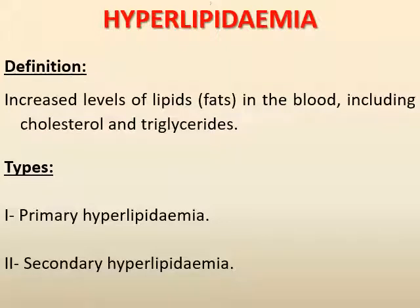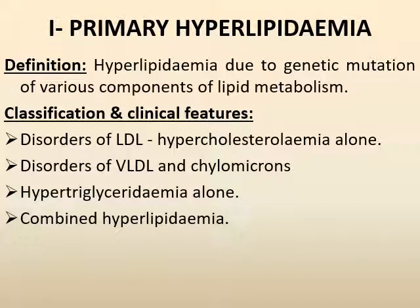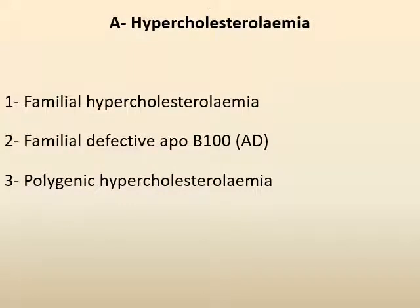The second part covers hyperlipidemia, defined as increased levels of lipids in the blood including cholesterol and triglycerides. The types are primary hyperlipidemia and secondary hyperlipidemia. Primary hyperlipidemia is due to genetic mutations of various components of lipid metabolism, classified into disorders of LDL hypercholesterolemia, disorders of VLDL and chylomicrons, hypertriglyceridemia alone, or combined hyperlipidemia. Hypercholesterolemia is subdivided into familial hypercholesterolemia, familial defective ApoB-100, and polygenic hypercholesterolemia.